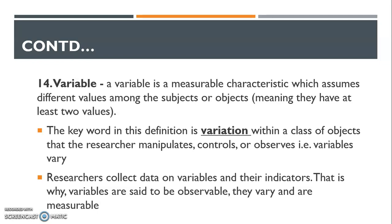The next term we define is variable. A variable is a measurable characteristic which assumes different values among the subjects. The key word in variables is variation — a variable must vary, it is observable, and it is measurable. A variable is any characteristic that you vary across a subject or an object.